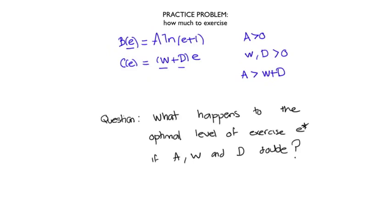Now the question that I want you to answer is: what happens to the optimal level of exercise, which we are going to denote by e*, when the key parameters of the problem, which are A, w, and D, double?